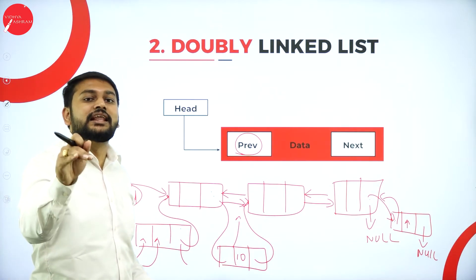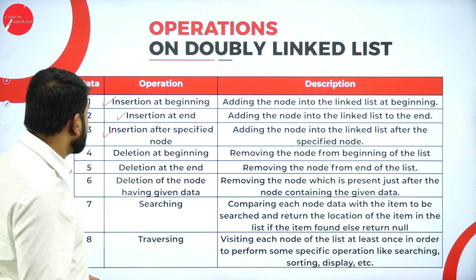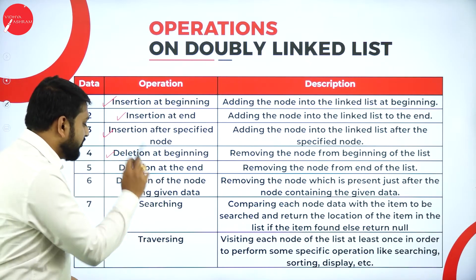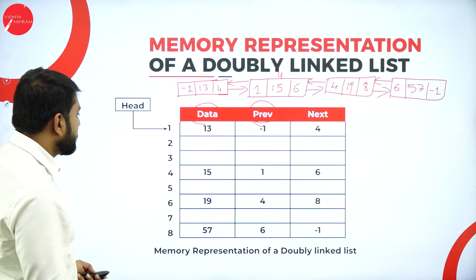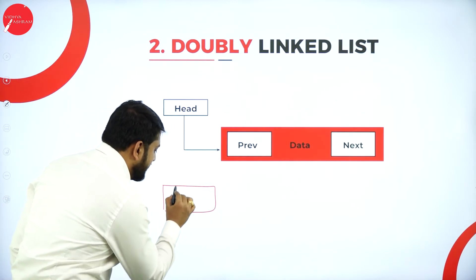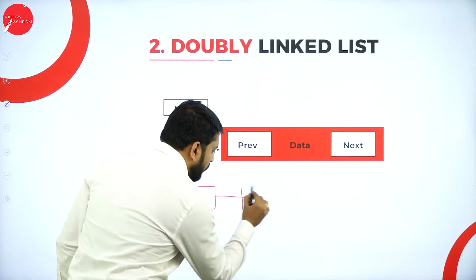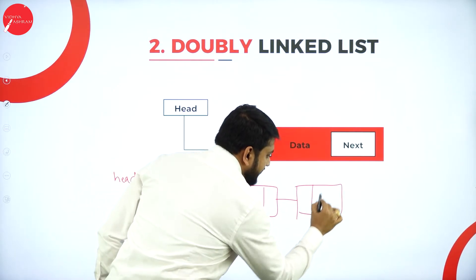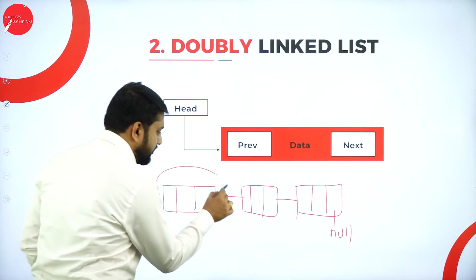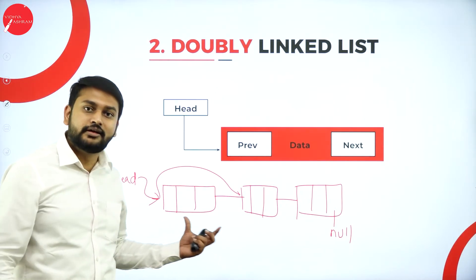Moving on to deletion operations. For deletion at the beginning: head is pointing to the first node. To delete it, simply move head to point to the second node and free the first node. That is the deletion at the beginning in a doubly linked list.